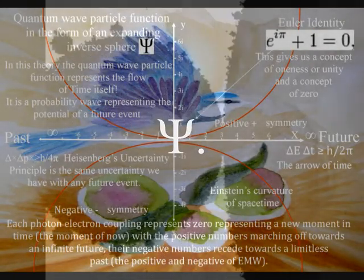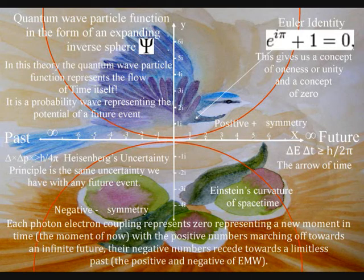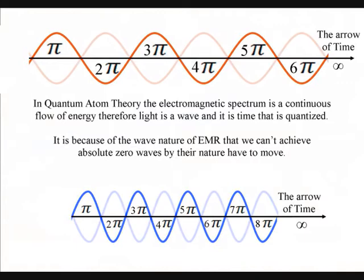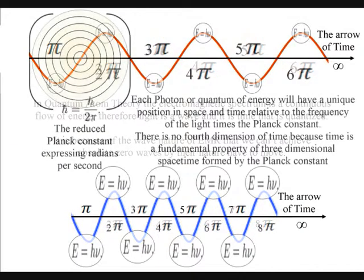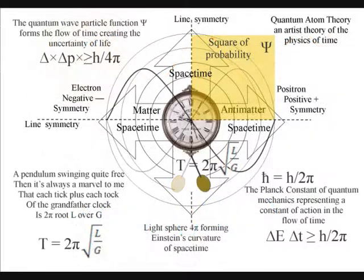This has gauge symmetry, and we can re-gauge each new photon at zero, representing a new moment in time, the moment of now, with the positive numbers marching off towards an infinite future, their negative numbers receding towards a limitless past — the positive and negative of electromagnetic waves. This gives us a deeper understanding of time and a reason why we have a future and a past.